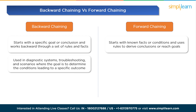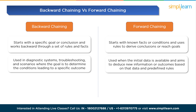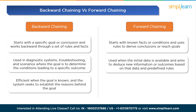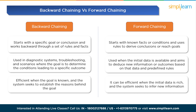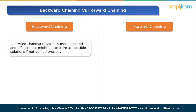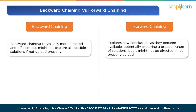Backward chaining is commonly used in diagnostic systems, troubleshooting, and scenarios where the goal is to determine the causes or conditions leading to a specific outcome. Forward chaining is often used when initial data is available and aims to deduce new information or outcomes based on that data and predefined rules. Backward chaining can be efficient when the goal is known and the system seeks to establish the reasons behind it, while forward chaining can be efficient when initial data is rich and the system seeks to infer new information. Backward chaining is typically more directed and efficient, but forward chaining may explore a broader range of solutions as new conclusions become available.